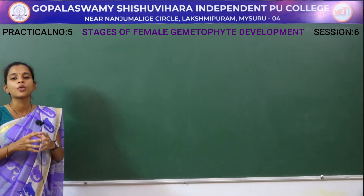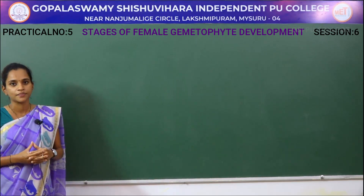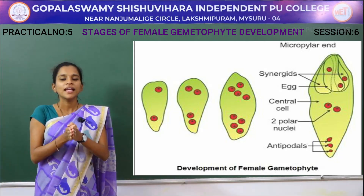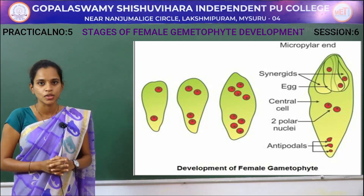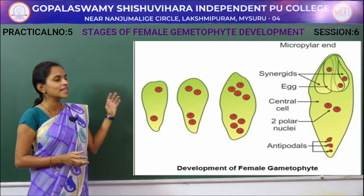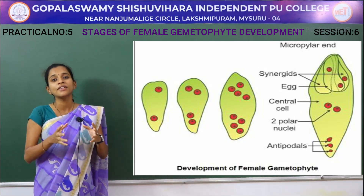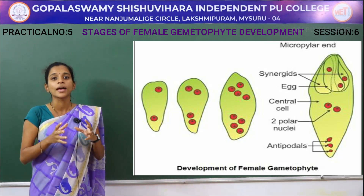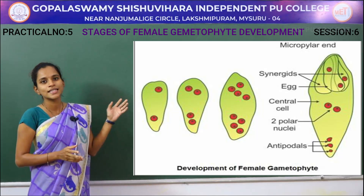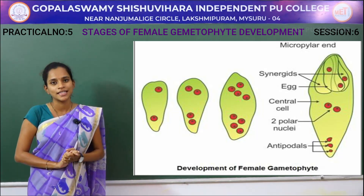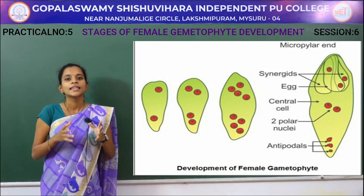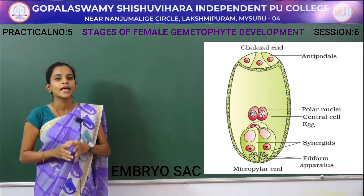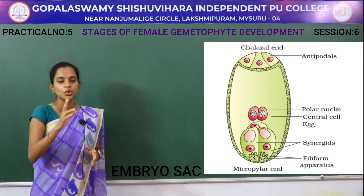We will now study the development of the female gametophyte. On the screen you can see a series of diagrams showing the female gametophyte present within the nucellus, illustrating the stages of development of the embryo sac from a megaspore mother cell. You can see the two-celled and four-celled stages, and finally in the embryo sac there are eight nuclei — three at the chalazal end, three at the micropylar end, and two in the center.